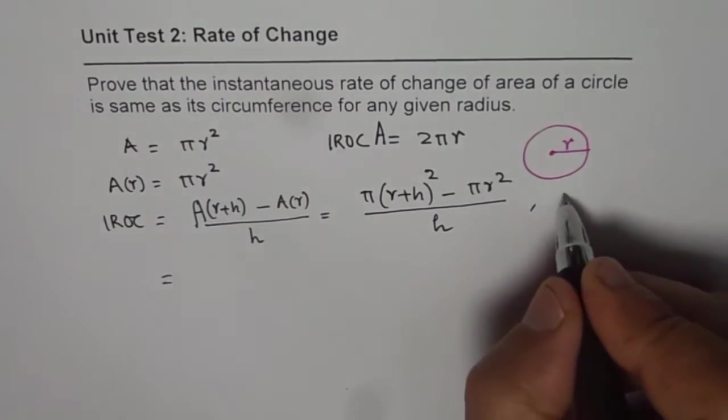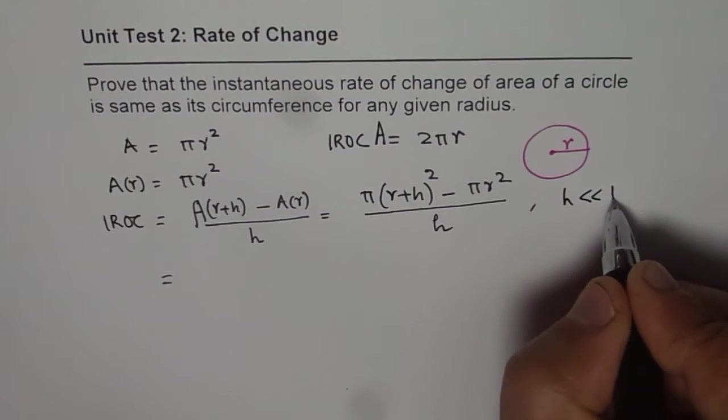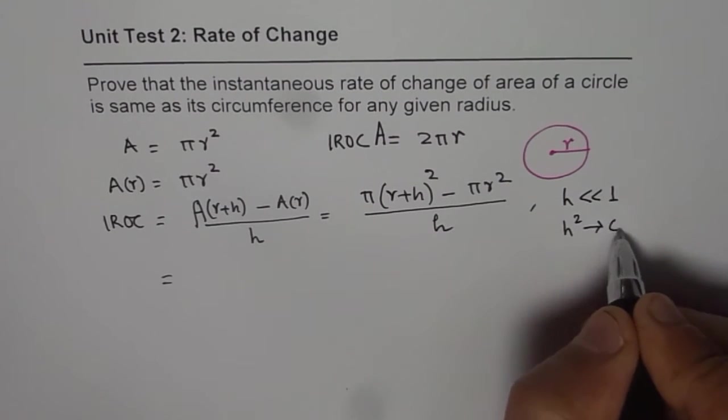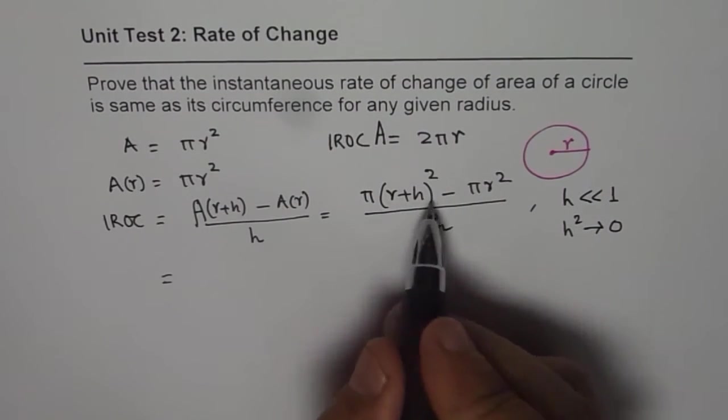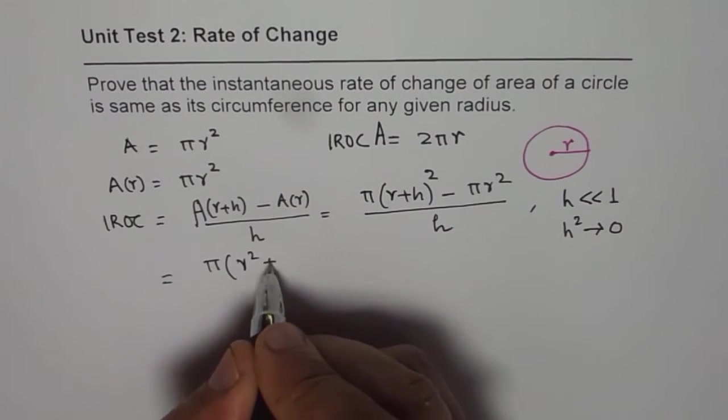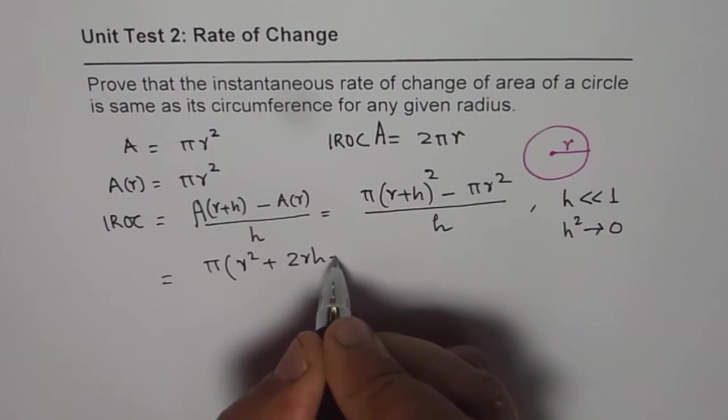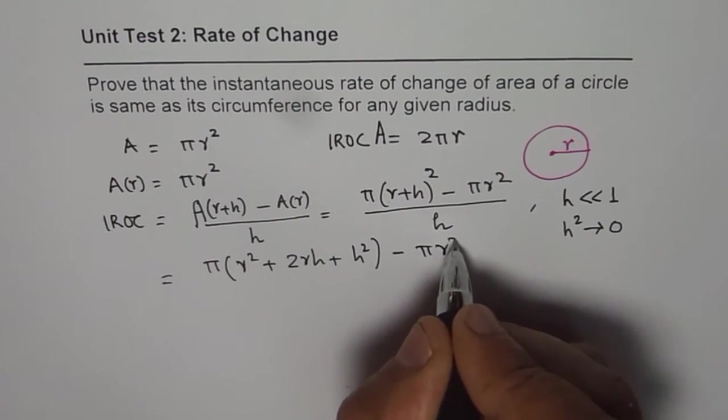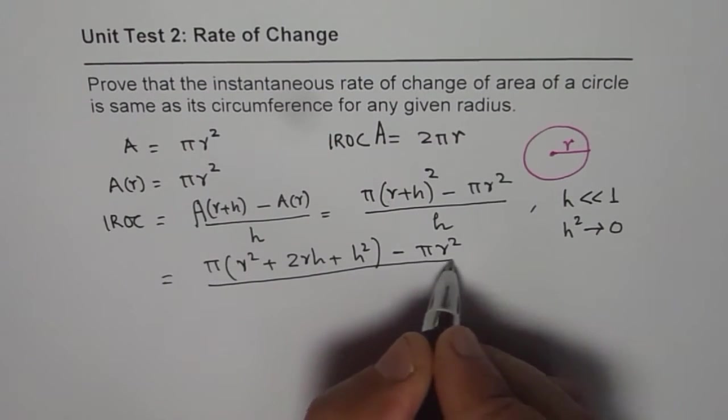Now remember what is h? h is very very small as compared to 1. So h square will approach 0. Remember that part. Let us expand this. So we get pi times r square plus 2rh plus h square minus pi r square divided by h.